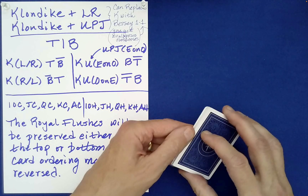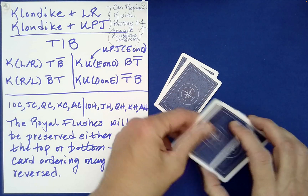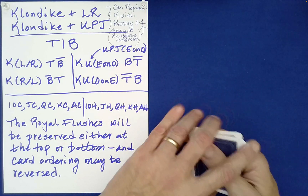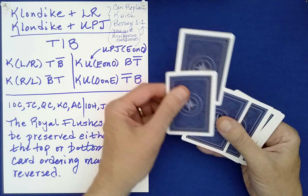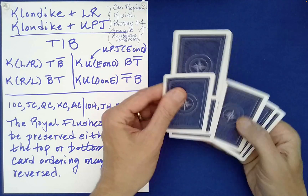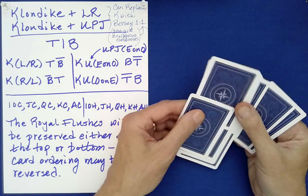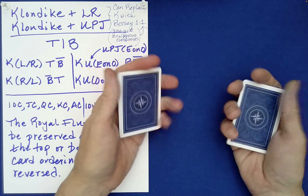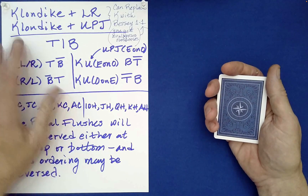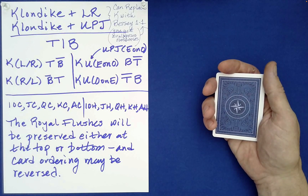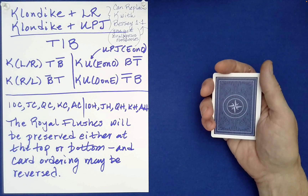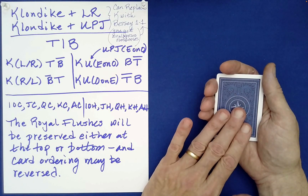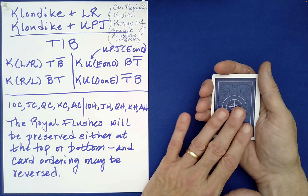Or if we perform a Klondike followed by an up-jog, even or odd, it will have the same effect. You can have the spectator tell you how to stack these — the left-position cards or the right. The key is you would perform several of these in succession, giving the illusion of mixing the cards, when in fact you know quite a bit about the organization of this packet.